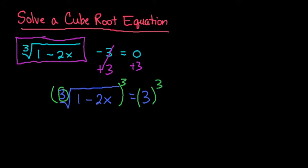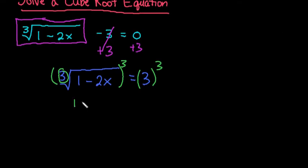When we simplify, we're left with 1 minus 2x because the cube and the cube root undo each other—they cancel out. On the other side we have 3 to the third power, which means 3 times 3 times 3, giving us 27.